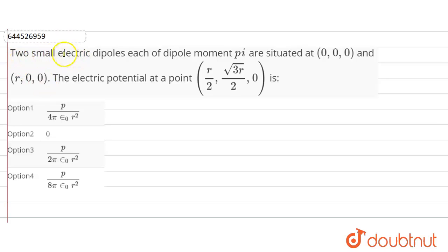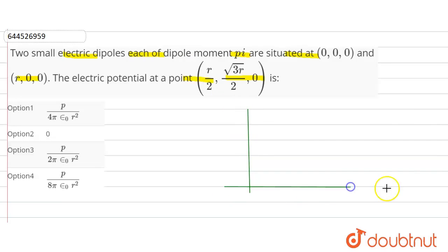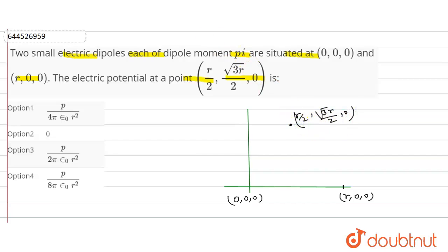The question given here: two small electric dipoles, each of dipole moment p-hat i, are situated at the origin (0,0,0) and at (r, 0, 0). Find the electric potential at the point (r/2, √3r/2, 0). First, we will draw the coordinate system — this is our y-coordinate, this is our x-coordinate, with the origin at (0,0,0).